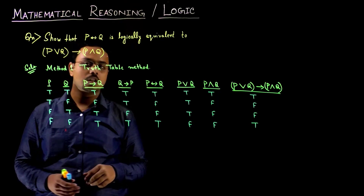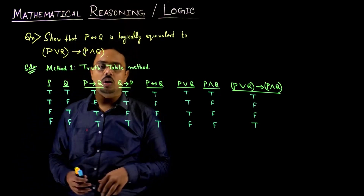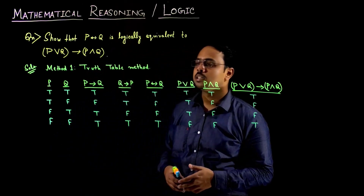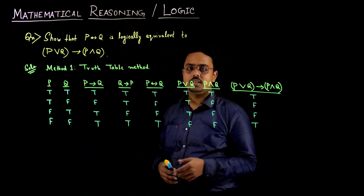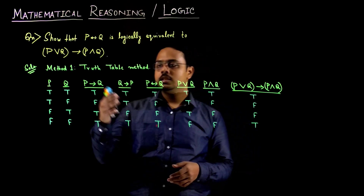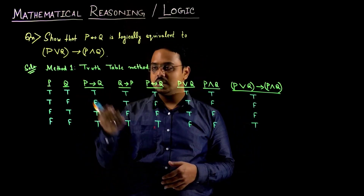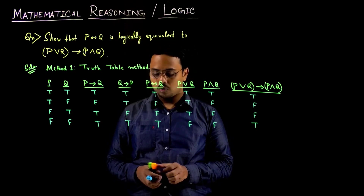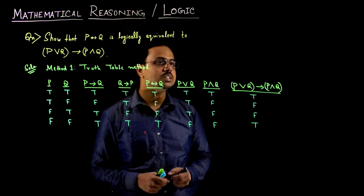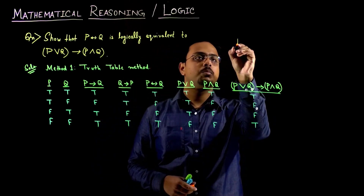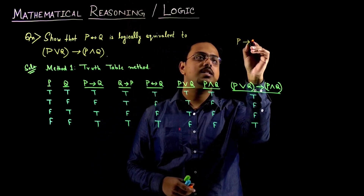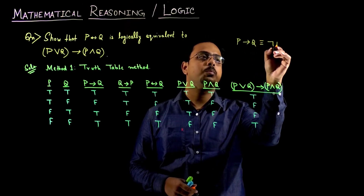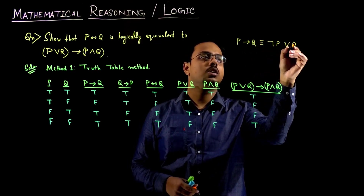True implies true gives us true; true implies false gives us false. You can easily check these results by using the equivalence laws for the P implies Q value. The equivalence law for P implies Q is: NOT P or Q.